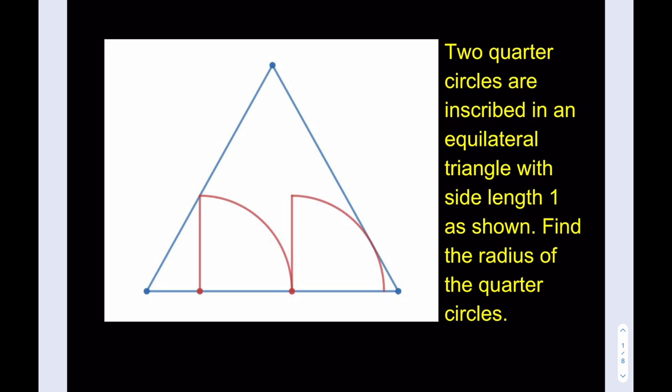So these two quarters are identical, even though it wasn't mentioned in the statement, they are identical or congruent, and we're going to find the radius of them. Let's get started.